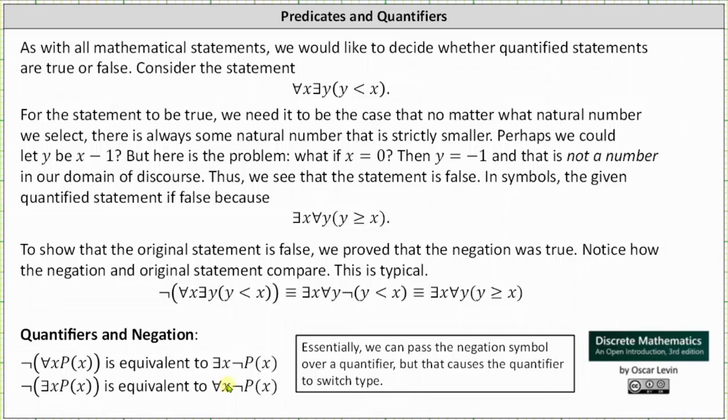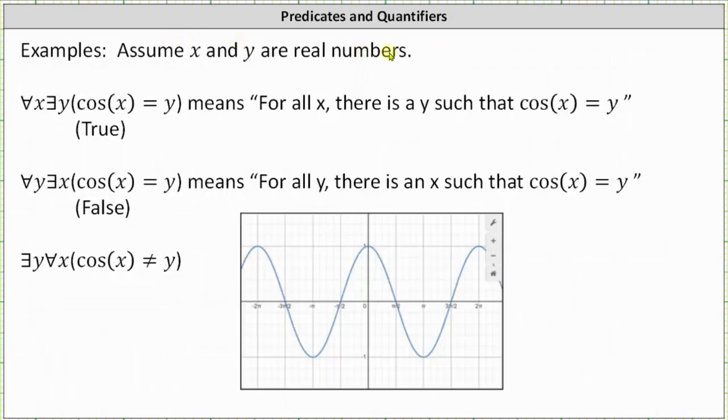Before we go, let's take a look at two more quantified statements. And here we'll assume x and y are real numbers. So first we have, for every x, there exists a y such that cosine(x) equals y. And notice x is the input angle into the cosine function and y is the output value. And it is true...